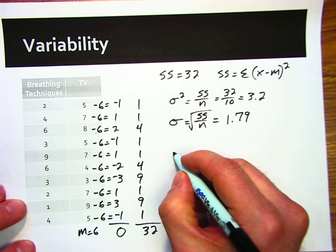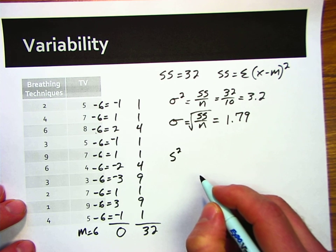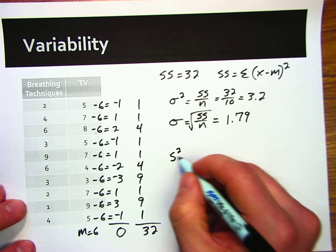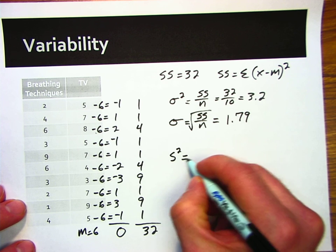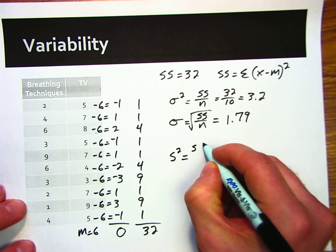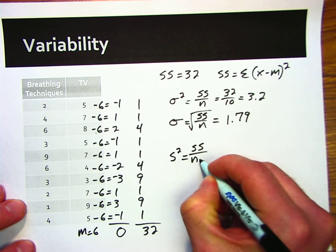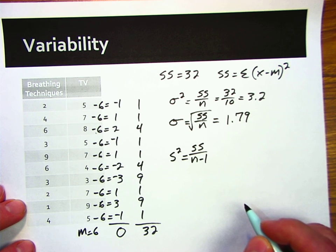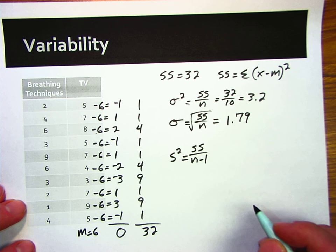If we're looking at samples, we have lowercase s. We're back to the Roman alphabet here. Lowercase s. And the formula changes just slightly. We just divide by n minus 1 instead. The n minus 1 is a correction for this.